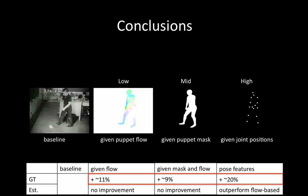Here we summarise our results. Using ground-truth, we find that low- and mid-level features lead to roughly 9-11% gain. The high-level pose is the best feature, leading to roughly 20% gain over the baseline. The evaluation of state-of-the-art flow and human detection algorithms shows that they cannot help with action recognition. The most interesting discovery is that the pose estimated by the state-of-the-art algorithm already outperforms flow-based features for the full body. Please visit the JHMDB website for our dataset, as well as the action recognition and pose estimation challenge.